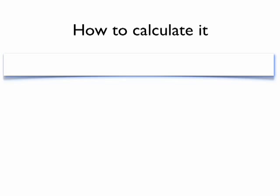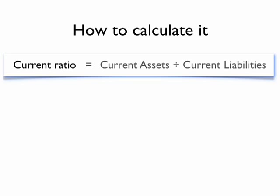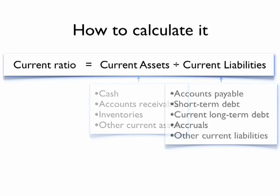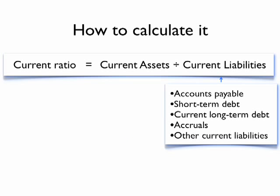Here's the formula for the current ratio: the current ratio equals total current assets divided by total current liabilities. Current assets includes every current asset account, even cash. Current liabilities means all the current liability accounts, including debt.